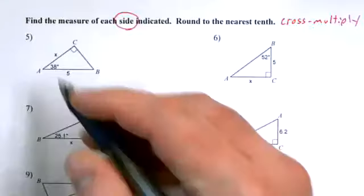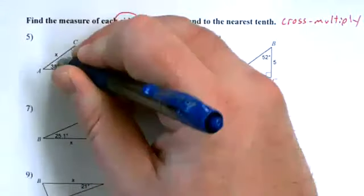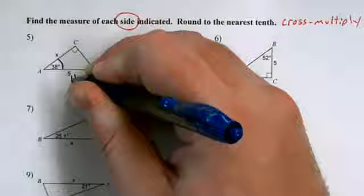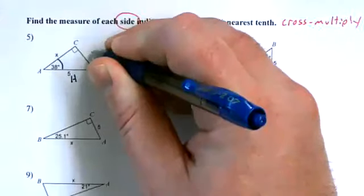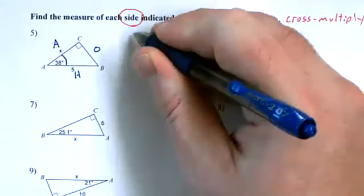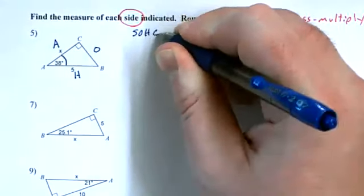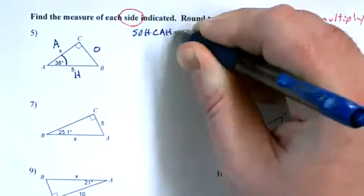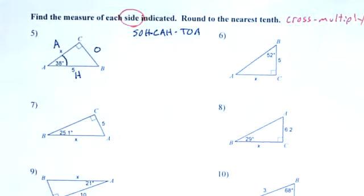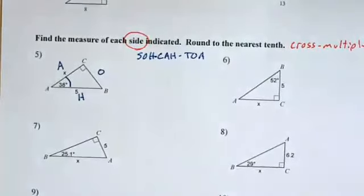I can see I'm solving for a side. So I know I'm going to cross multiply. We'll start with the same steps that we did before. Mark your reference angle. Label your sides. Hypotenuse. Opposite, adjacent. Let me get my cheat code on here.